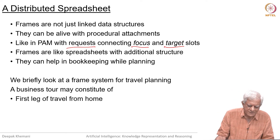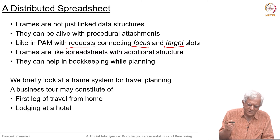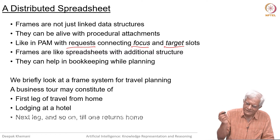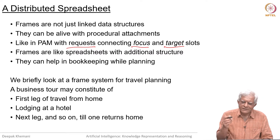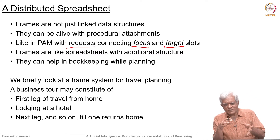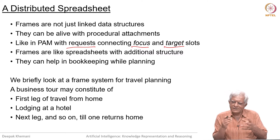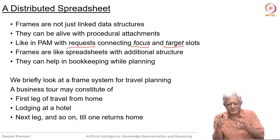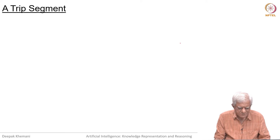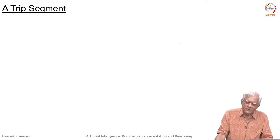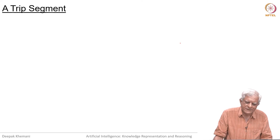A business tour, for example, may constitute of a first leg where you start planning travel from home, then you have to stay in a hotel, then you go to the next leg and so on. Imagine that you have this proactive software which will fill in default values and allow you to extend the plan by filling in everything that is already known. One component of such a planner would be something called trip.